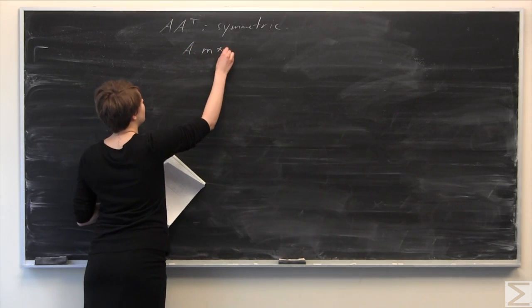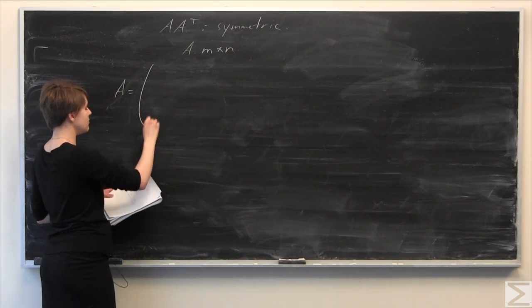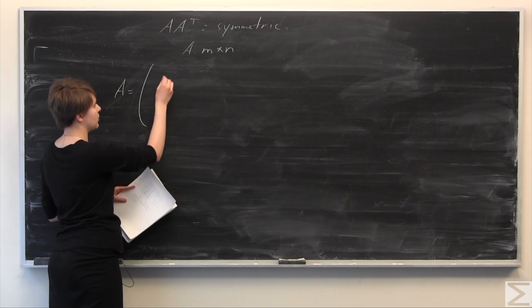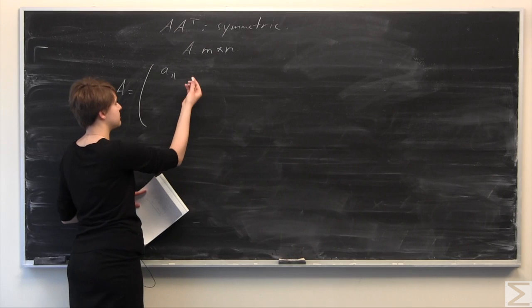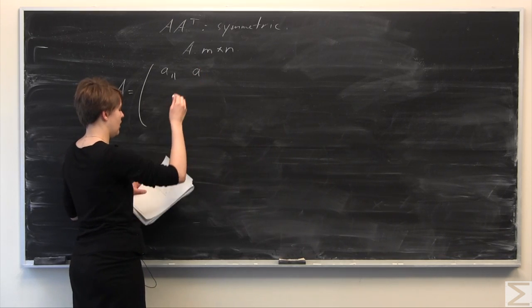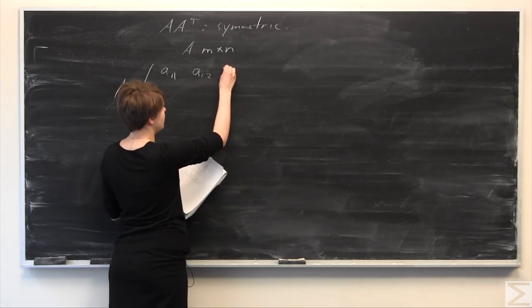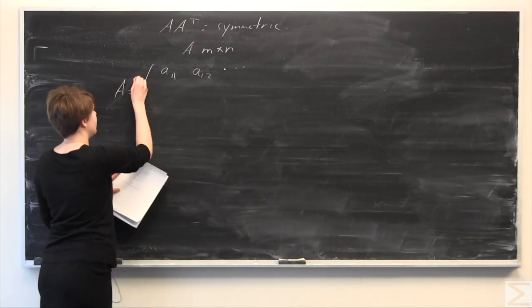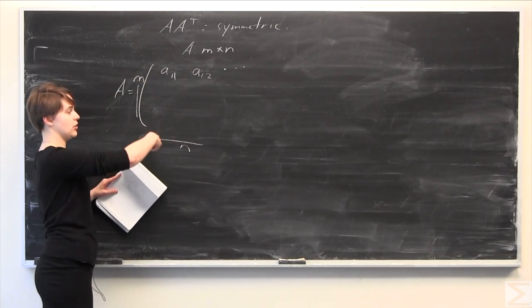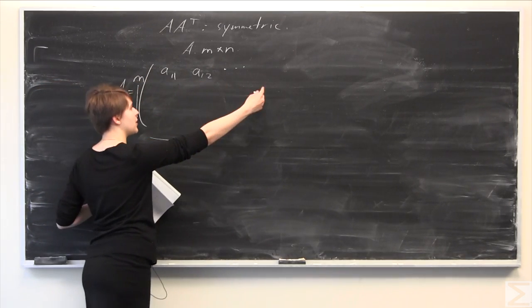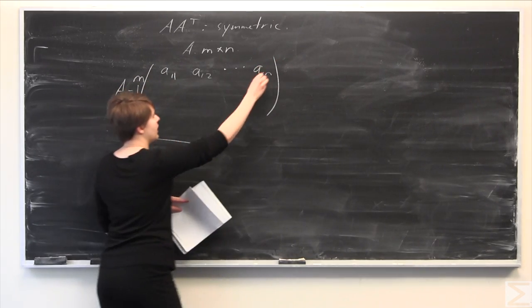Consider A to be some m by n matrix. Because A is m by n, we can express A in matrix form. We'll express all of our components: first row, first column is A₁₁; first row, second column is A₁₂; A₁₃, and so on. We have m rows and n columns, so when we get all the way over, we're at A₁ₙ.